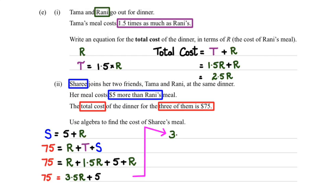So rearranging everything here, we are going to get 3.5R equals 75 take away 5. So 3.5R equals 70. And R is 70 divided by 3.5, which equals 20.